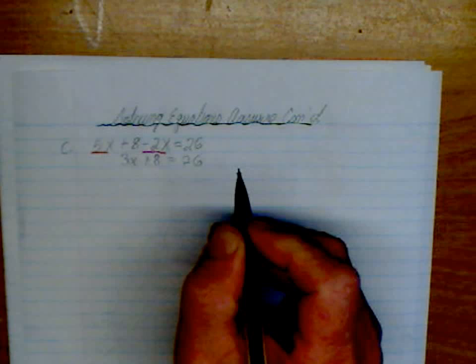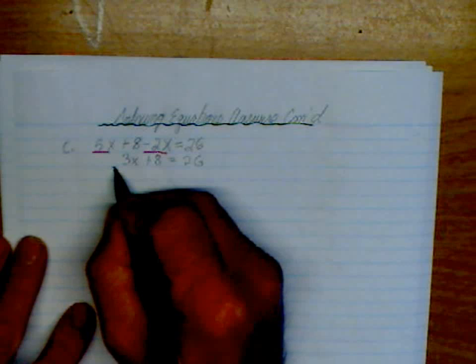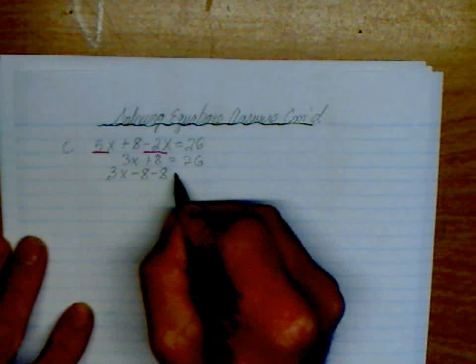So we can simplify. 5 take away 2 is 3x plus 8 is equal to 26. Now we're back to the same thing, adding or subtracting. So what we're going to do is we're going to subtract 8 from both sides.